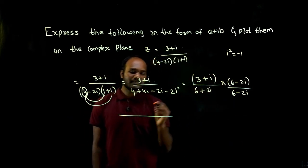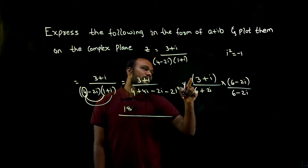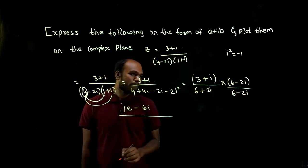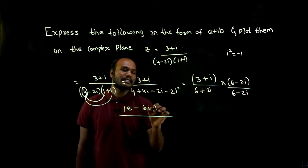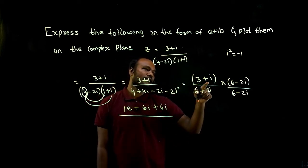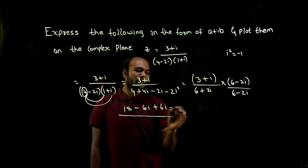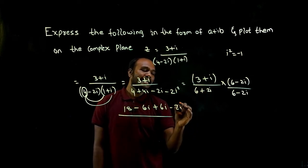So 3 times 6 is 18, 3 times minus 2i is minus 6i, 1 times 6 is 6i. Again, 1 times minus 2i is minus 2i squared.